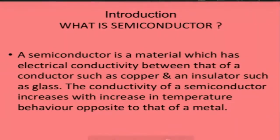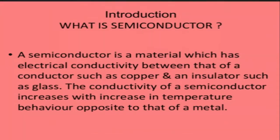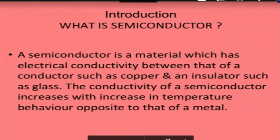In conducting materials, electrons are flowing. On the opposite side, in insulating material, we are not allowing those electrons to flow — it stops the flow of current. In between these two, sometimes the material allows electrons to flow and sometimes it does not. This property is basically required for some applications.